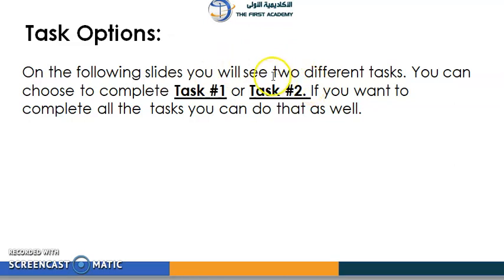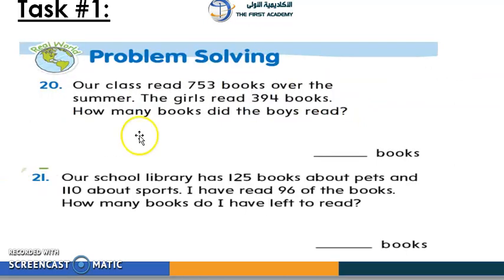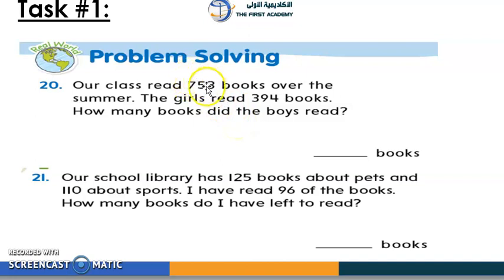Task time — you have two tasks to do: task number 1 and task number 2. You can choose one or do both; it's up to you. For the problem, as I said, you need to circle the numbers and find the keywords. Read slowly, everyone.